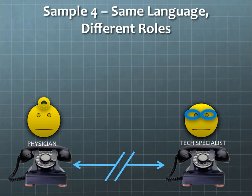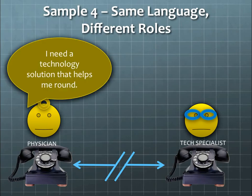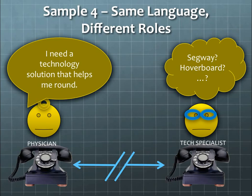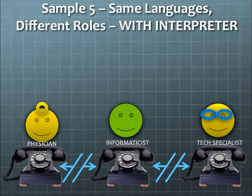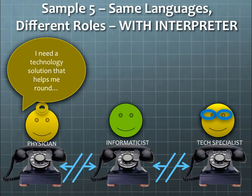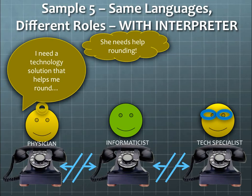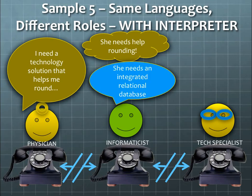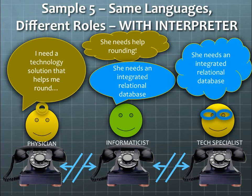The next sample: same language but two different roles, commonly seen in healthcare where a physician might be talking to a technology specialist. The physician says, 'I need a technology solution that helps me round.' What the tech specialist is thinking is maybe they need a Segway or a hoverboard. Without an interpreter, this results in a communications fail. With a clinical informaticist as translator, the informaticist hears she needs help rounding and translates that into she needs an integrated relational database. The technology specialist hears this and the communications win is achieved.